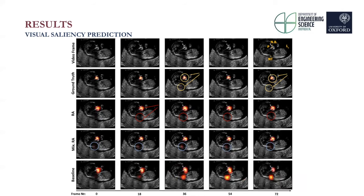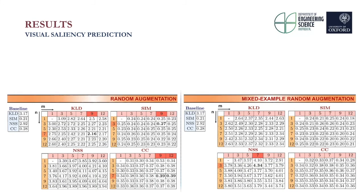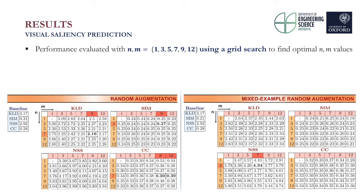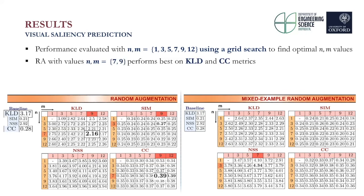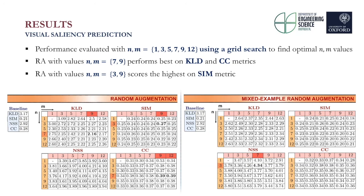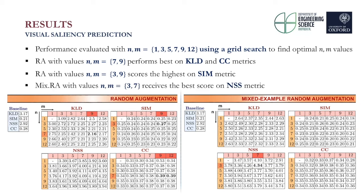Both models — RandAug and mixed RandAug — show better predictions of gaze locations for sonographers. The tables below provide the average test scores for RandAug, mixed RandAug, and the baseline with two augmentations: random rotation and horizontal flipping. Performance was optimized using a grid search to find the best n and m values; random horizontal and vertical flipping were used in all policies as a baseline augmentation. Both augmentation strategies outperform the baseline on all metrics. Random augmentation with n=7 and m=9 performed best on KLD and correlation coefficient metrics, while n=3 and m=9 scored best on similarity metric. Mixed random augmentation with n=3 and m=7 worked best on normalized scanpath saliency metric.